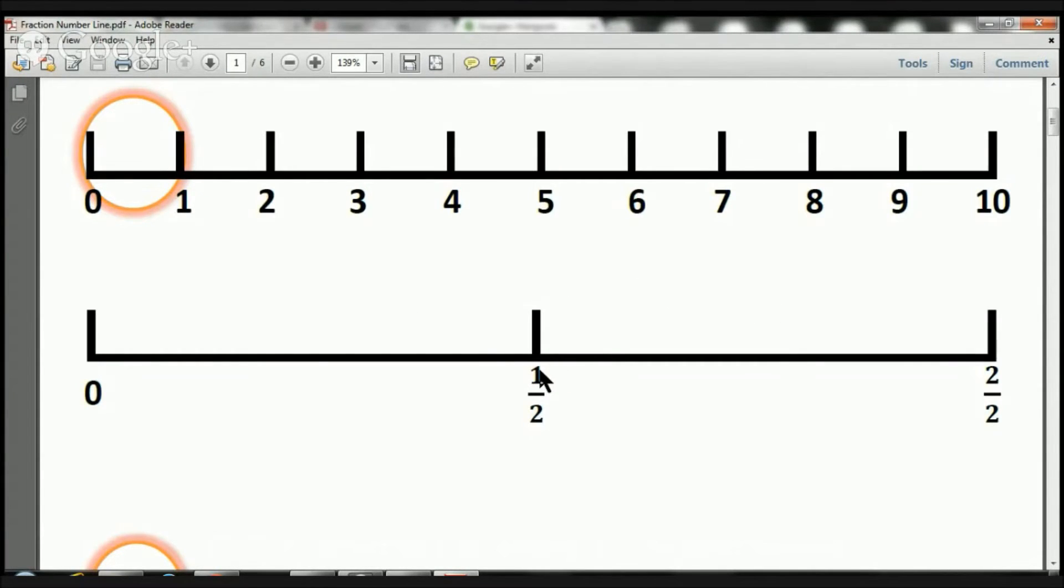This is the first piece. One over two. That's one half. The next piece is going to be two over two. Because that's two pieces right there, and this is the second piece.